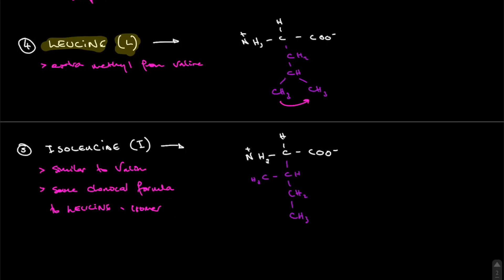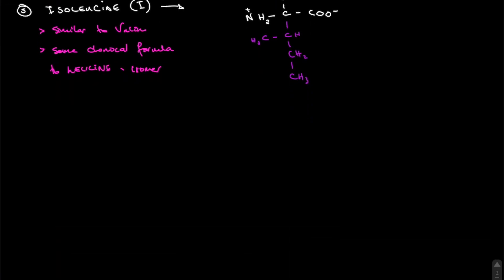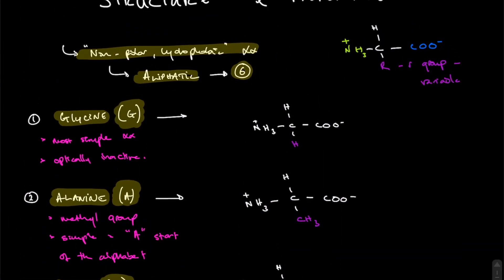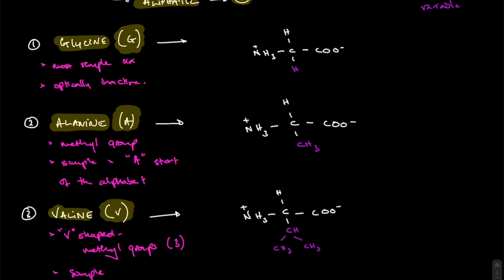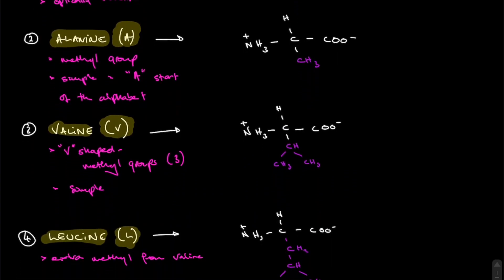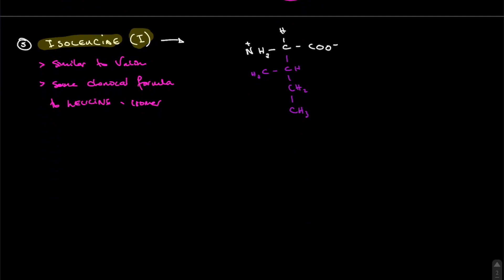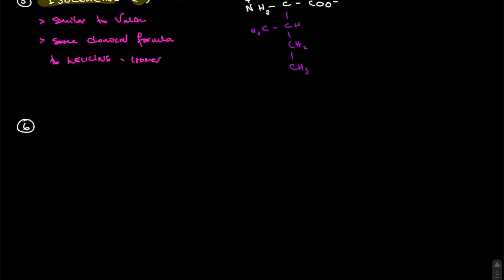That gives us five aliphatics so far. The last aliphatic amino acid is proline, which is slightly different — it has a five-atom ring structure with a nitrogen. Perhaps that's a good way of remembering it: it's the special-looking aliphatic amino acid.